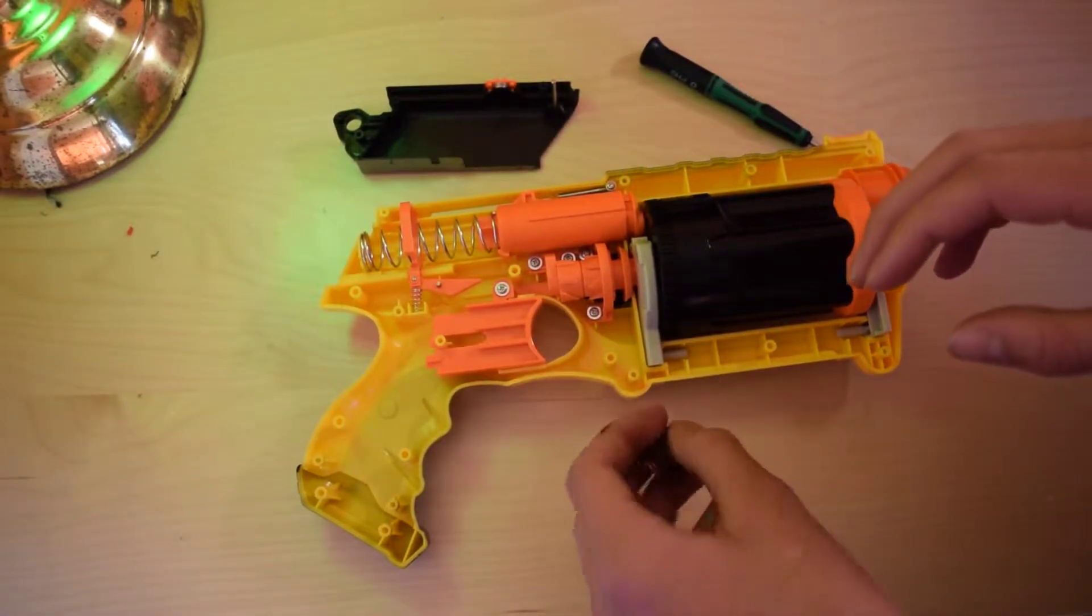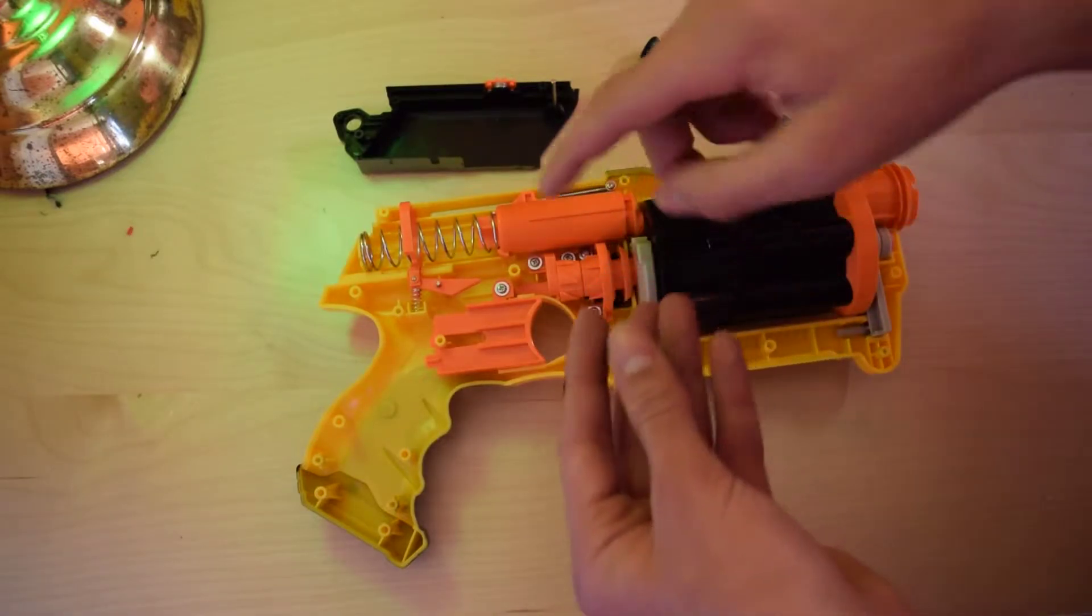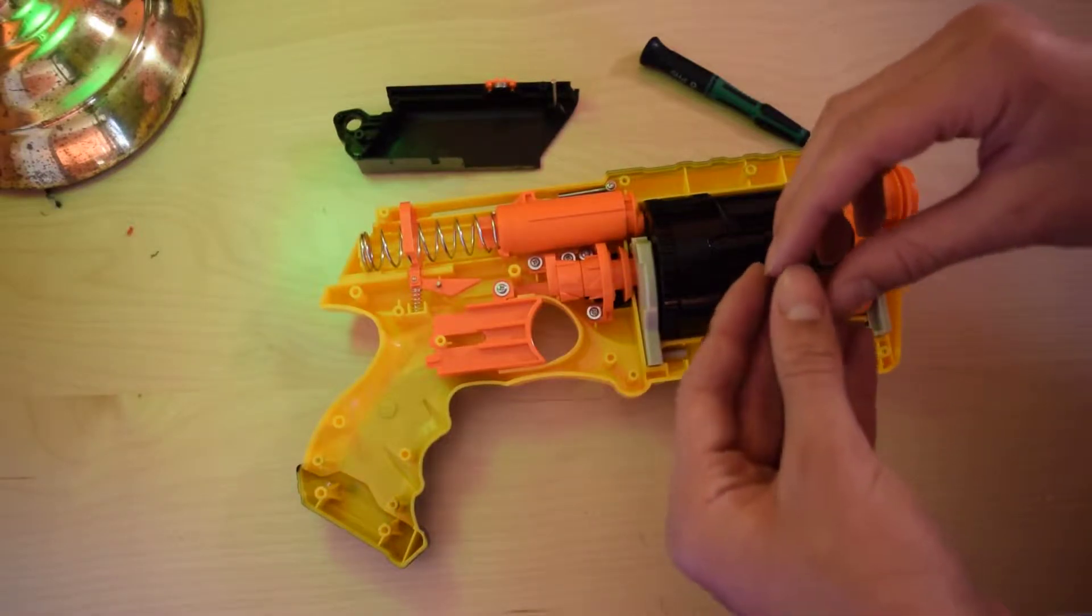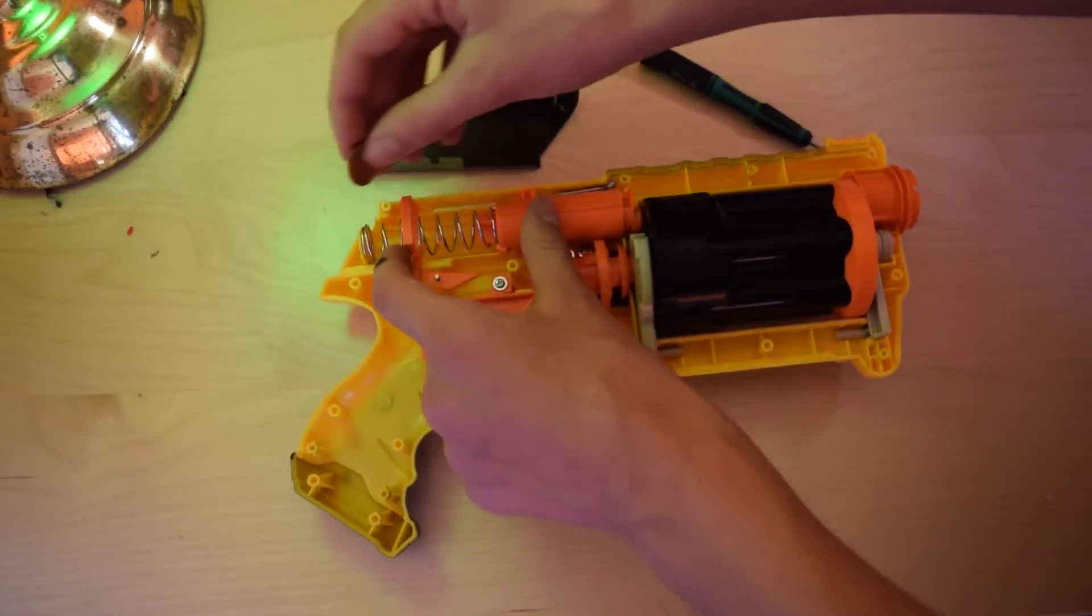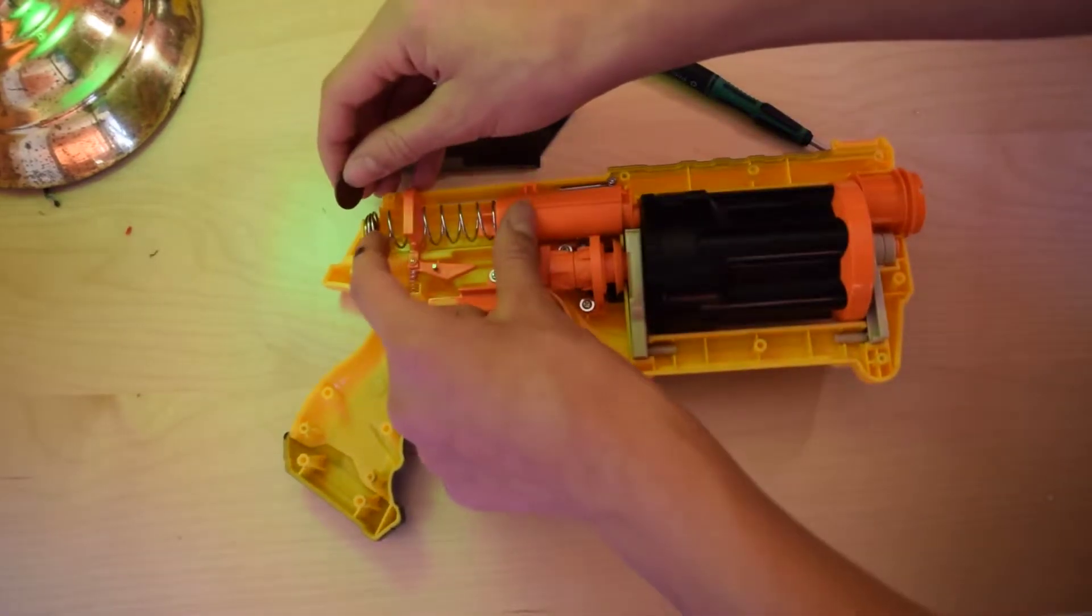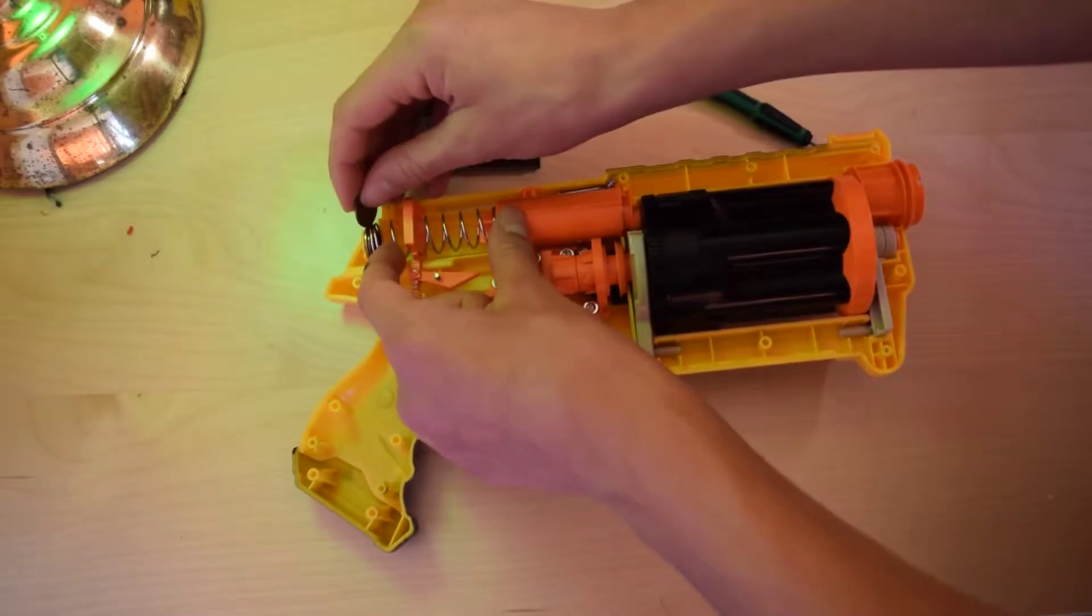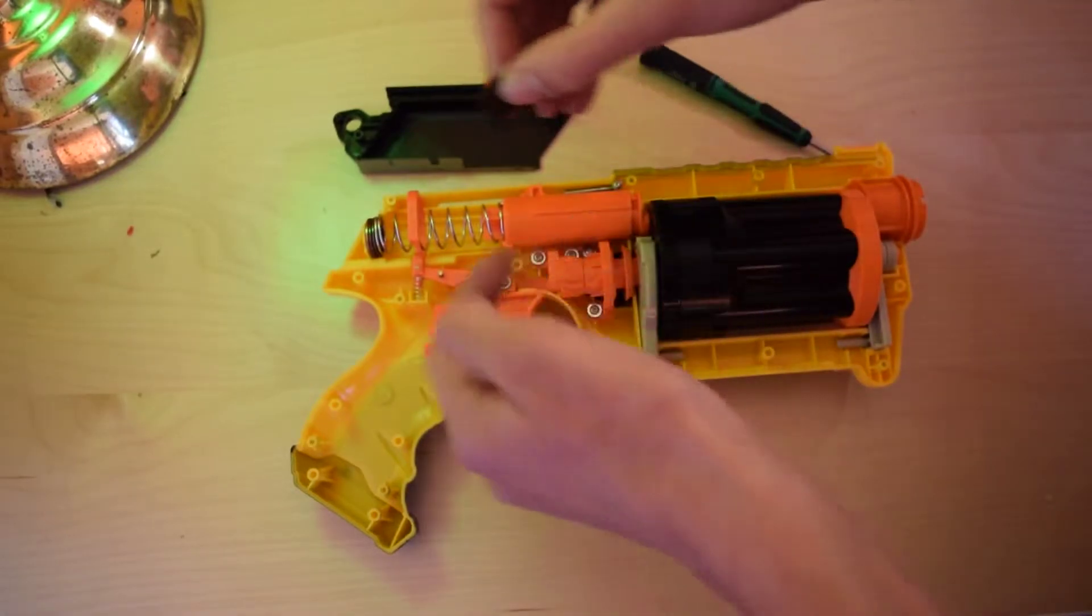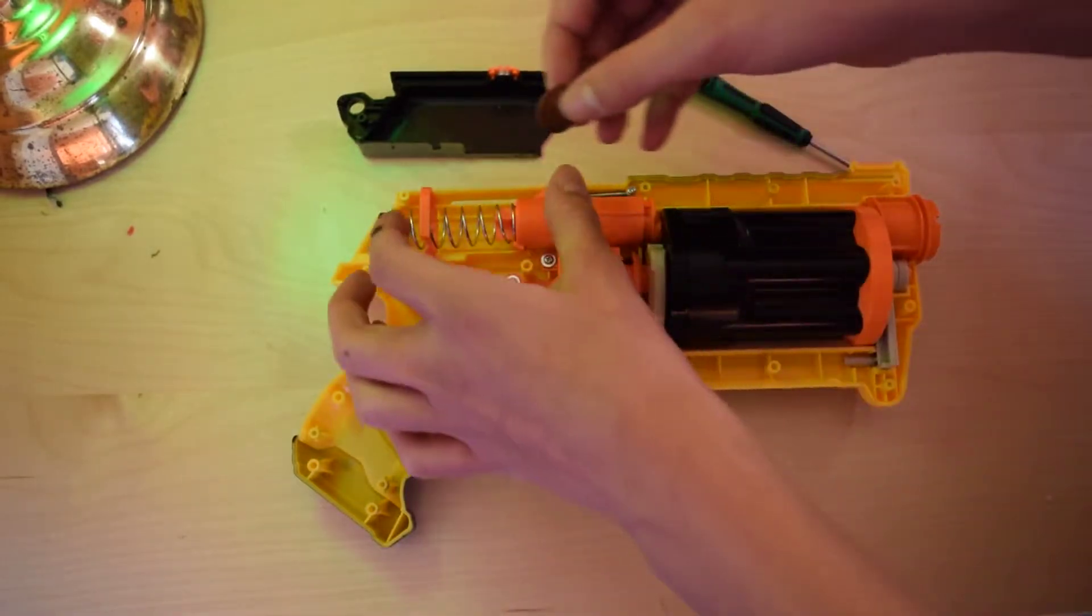Now comes the modification that has to do with the pennies. What we're going to do is put the pennies behind the spring, and it just so happens that the Maverick spring is the exact same diameter as regular pennies. And what this will do is compress the spring a little bit more and give it just a little bit more power. So simply push the spring forward and slide the pennies behind. And obviously the more pennies you do the more power it will have, but if you do too many then the spring will become over-compressed and that will just weaken it. So I think five is a pretty good spot but it's really up to you.